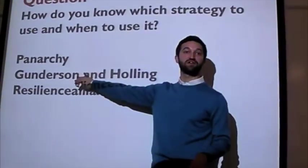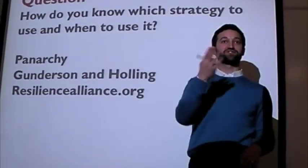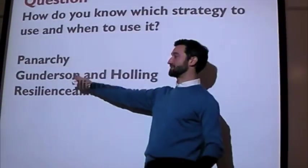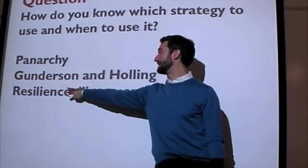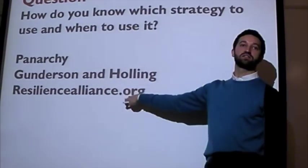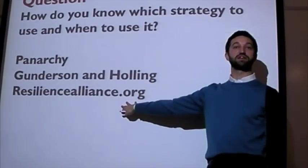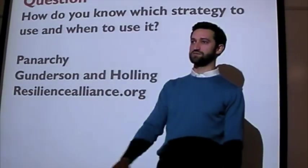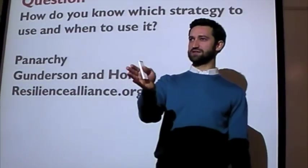During the break, there was a question about the references on who came up with this adaptive change cycle. The best reference here is this book called Panarchy by Lens Gundersen and Buzz Holling. They've got a great resource online called resiliencealliance.org. It's by the Stockholm Resilience Institute.